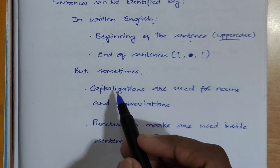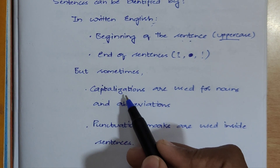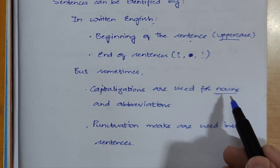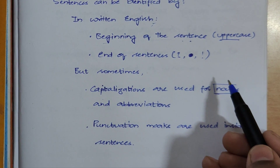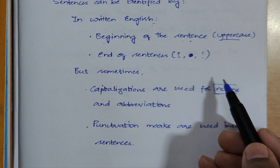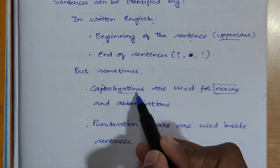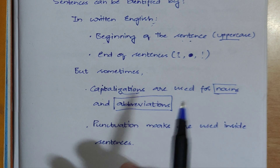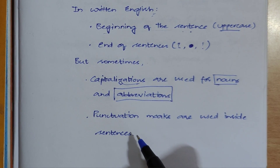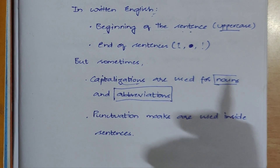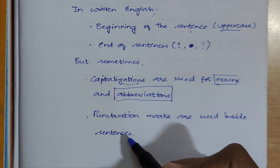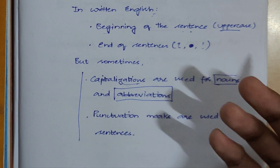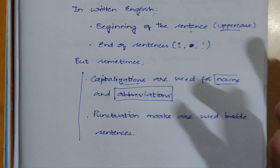Sometimes we use capitalizations in the middle of sentences — for example, when referring to proper nouns like person names or place names, we write capital letters. Also, abbreviations use capital letters. Additionally, punctuation marks are used inside sentences, not just at the end. These factors might confuse the system when trying to detect the sentence boundary.